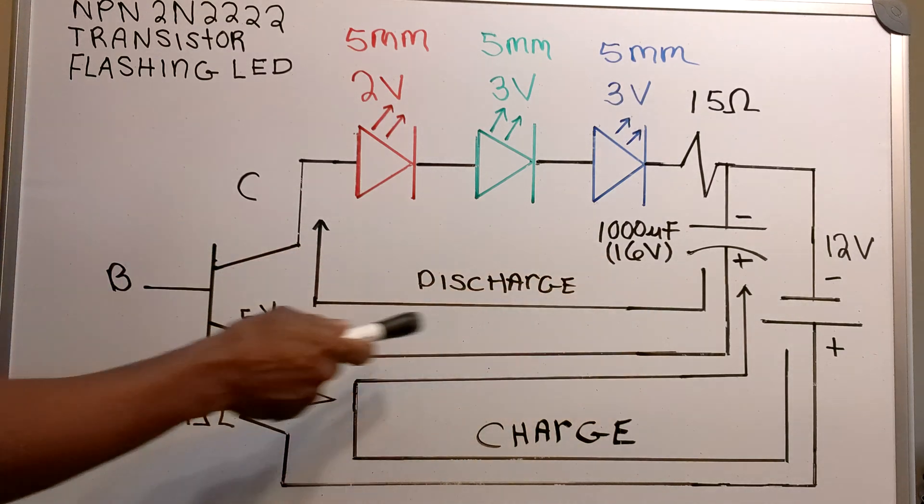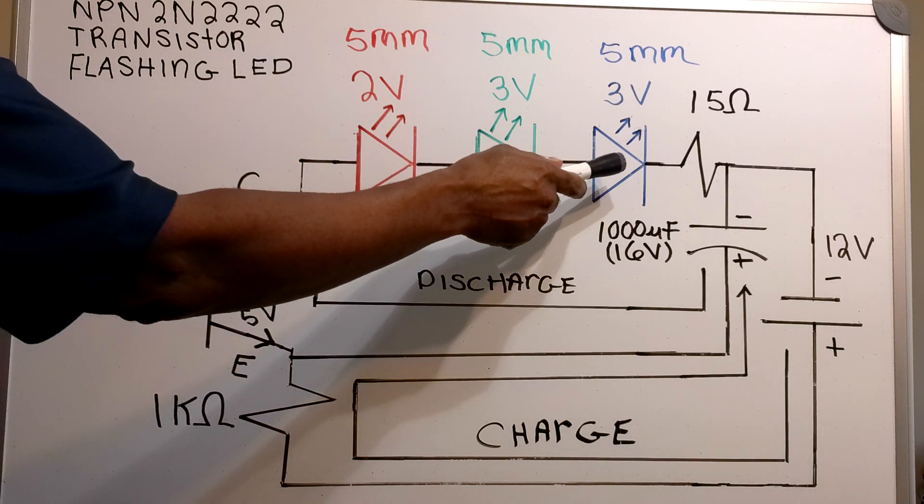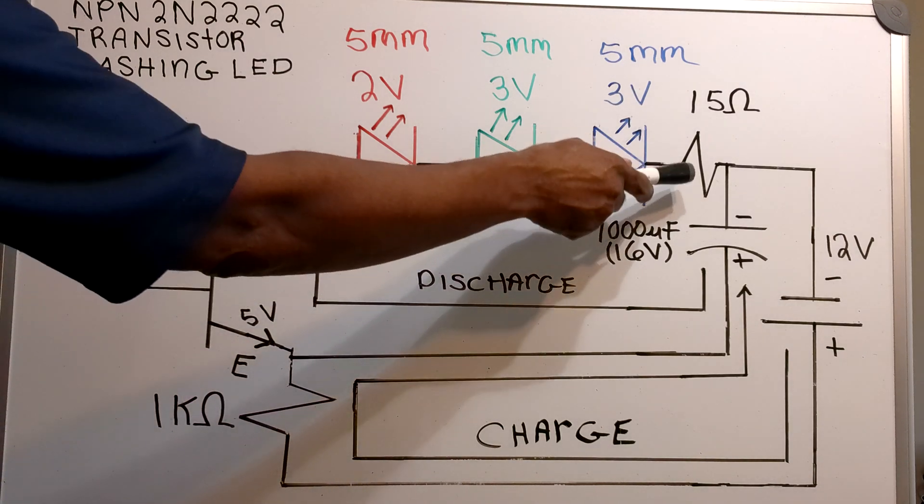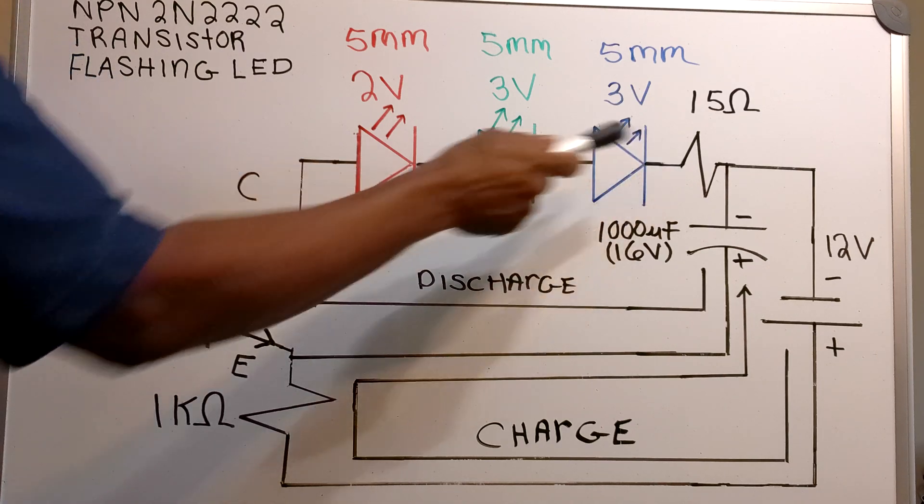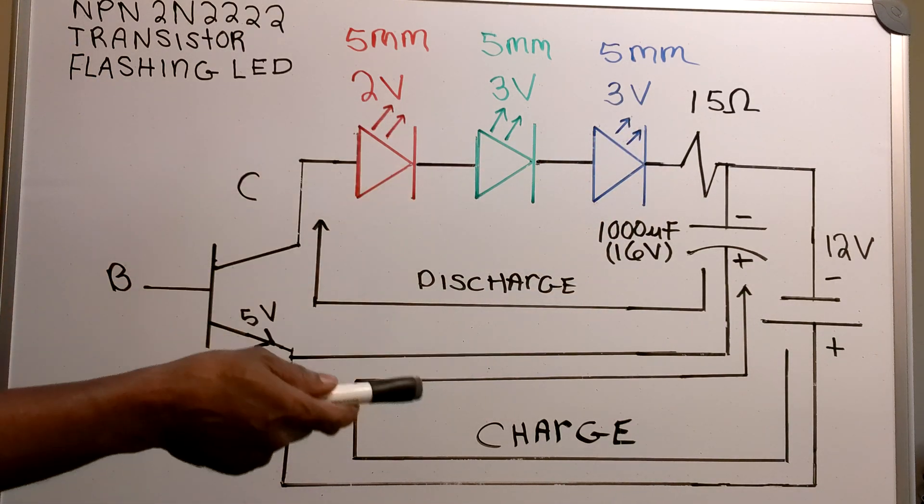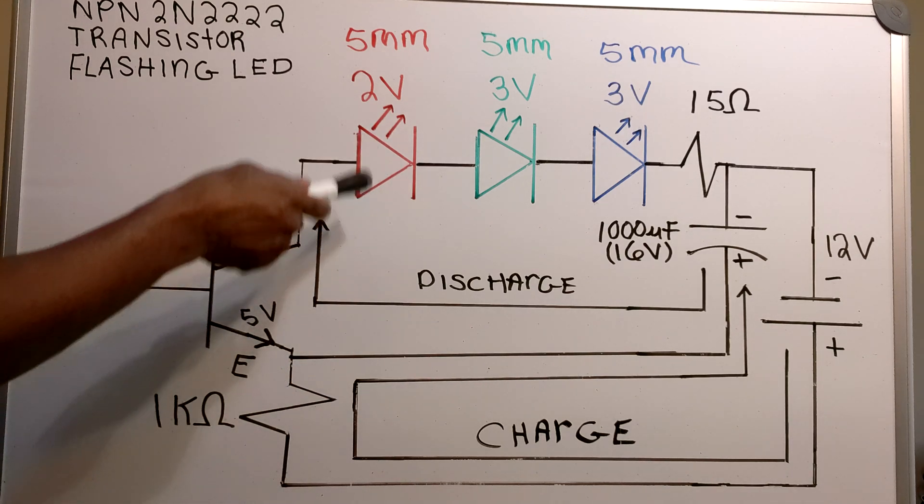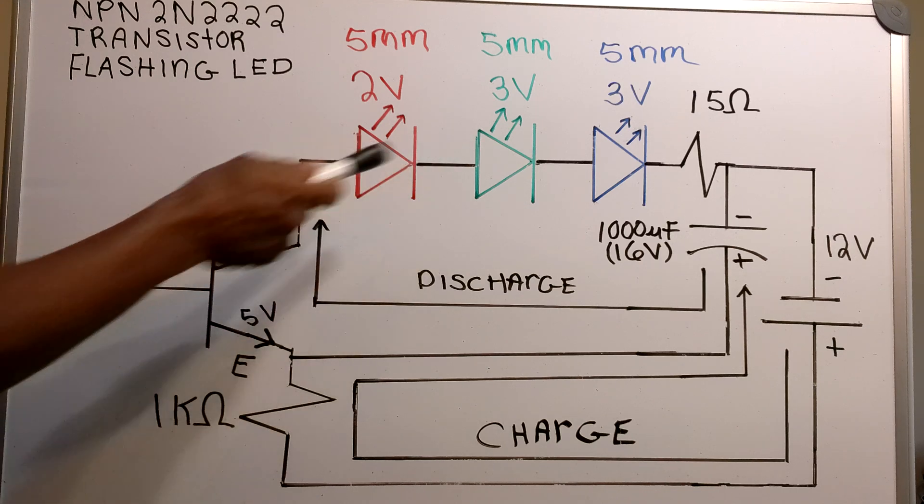Then the capacitor discharges through the LEDs and the 15 ohm resistor. This process of charge and discharge continues, and that is what makes the LEDs blink.